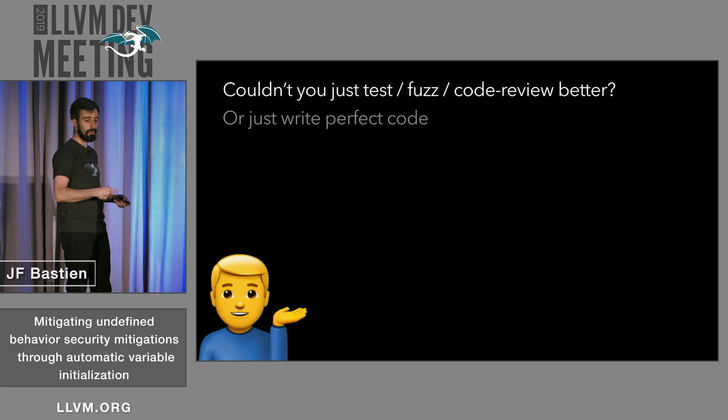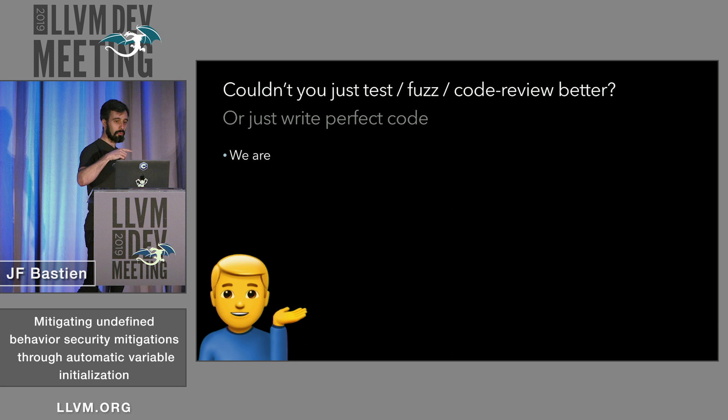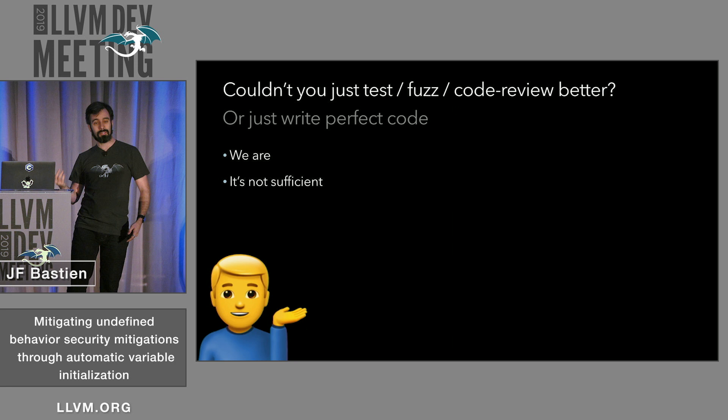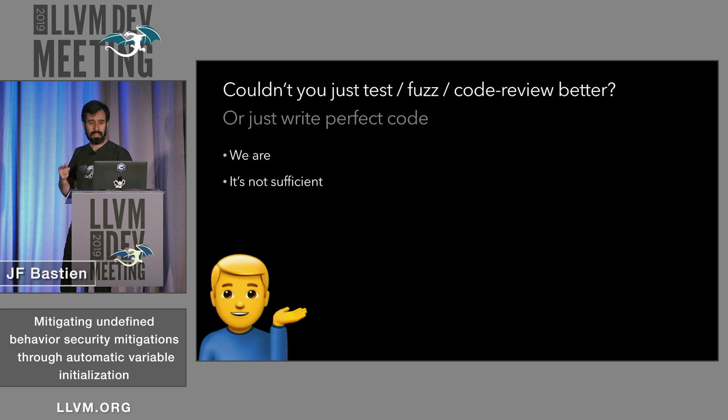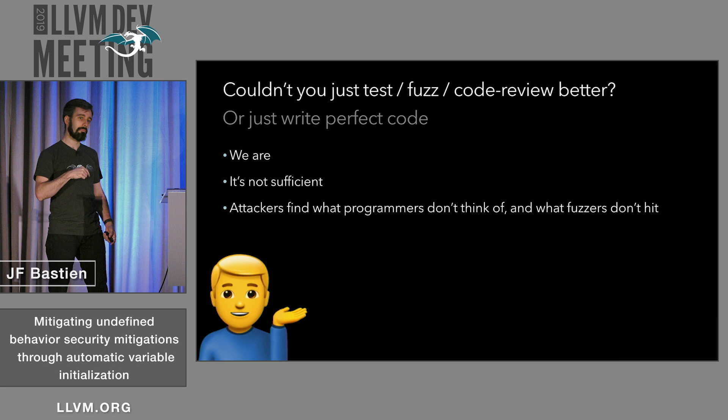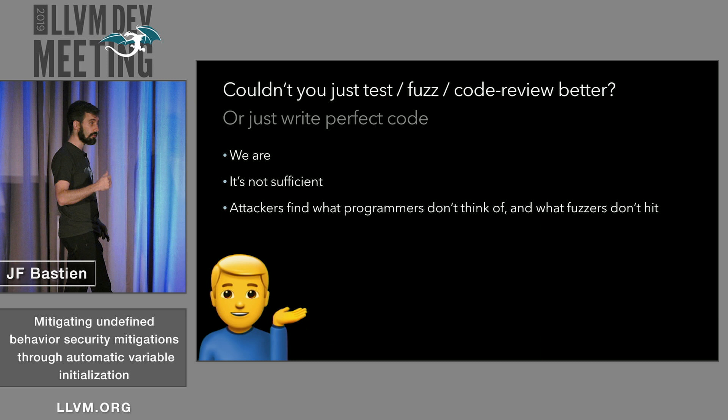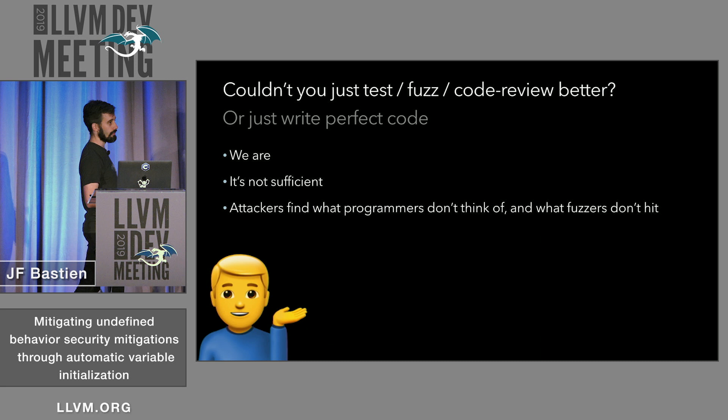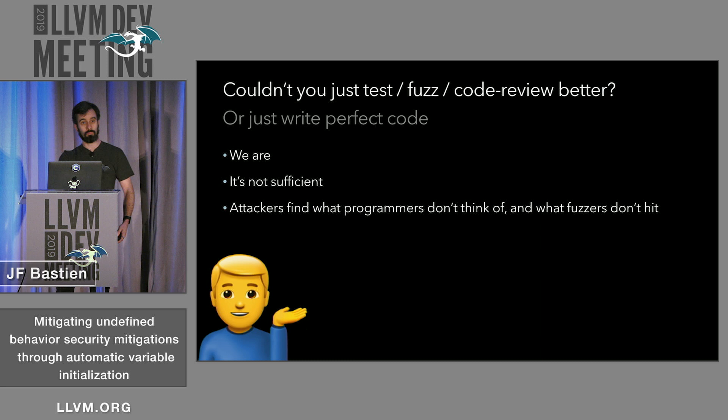The next question is: couldn't you just test, fuzz, do code reviews, or write perfect code? People are testing, fuzzing, and doing code reviews, but it's not sufficient — we still see those bugs in the wild. The reason we want to mitigate this isn't that people aren't testing or reviewing enough. It's that attackers tend to find bugs that programmers don't think of, and that fuzzers often don't find. Attackers have a different mindset, and these techniques — except writing perfect code — aren't sufficient to prevent bugs from happening at all.